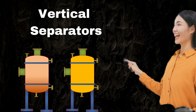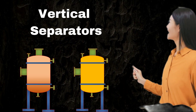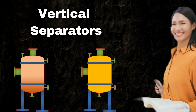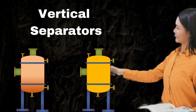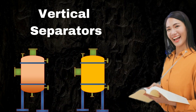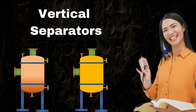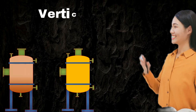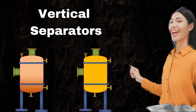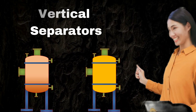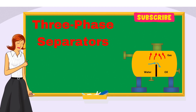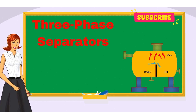The second type is the vertical separator. As the name suggests, these separators are oriented vertically. They work similarly to horizontal separators but are preferred when space is limited. There are other criteria for selection as well, but their compact orientation makes them a great choice for smaller installations.